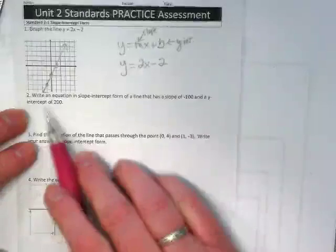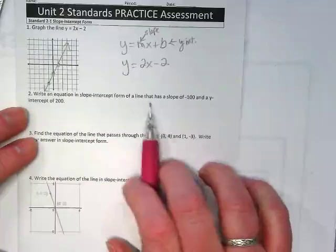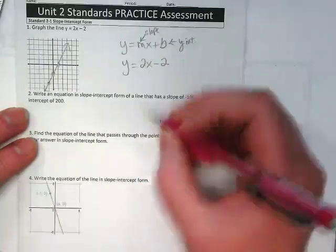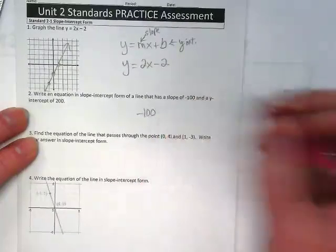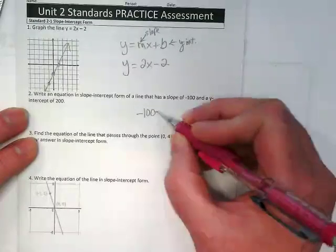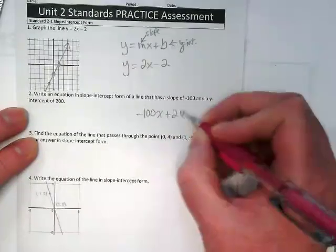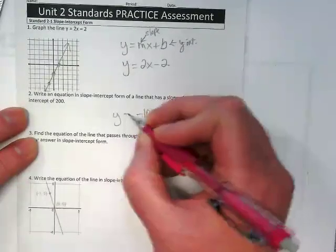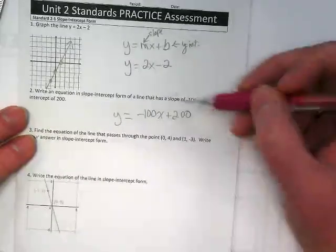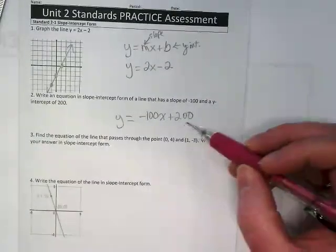Number 2 says write an equation in slope-intercept form of a line that has a slope of negative 100 and a y-intercept of 200. And it's as simple as that. We put the slope in where slope goes and the y-intercept at the end.